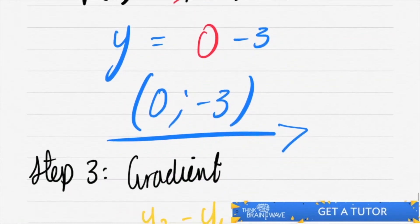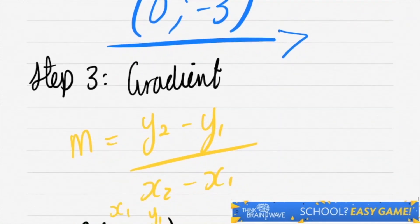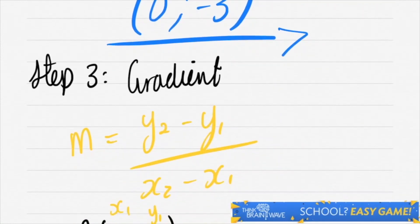Let's do step three: the gradient. That gradient is m is equal to y2 minus y1 over x2 minus x1.